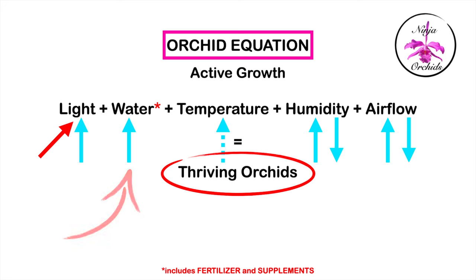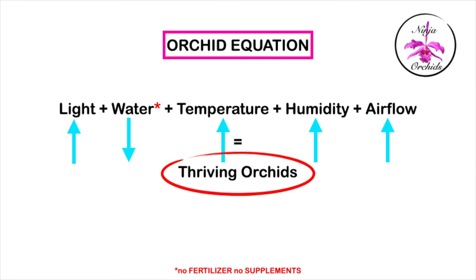Or you may need to stay on top of the watering to buffer against the dry air. What happens to this equation when dealing with resting orchids during the summer? You have higher light, you reduce water with increased temperatures, needing an increase in humidity to maintain some form of moisture retention, and you need to up the airflow to help cool the orchid down.